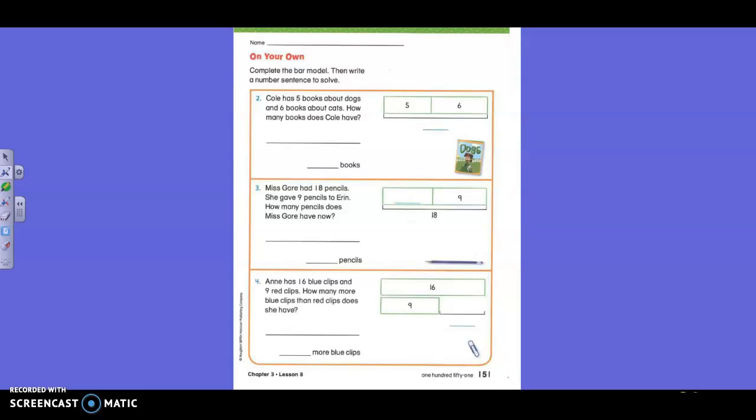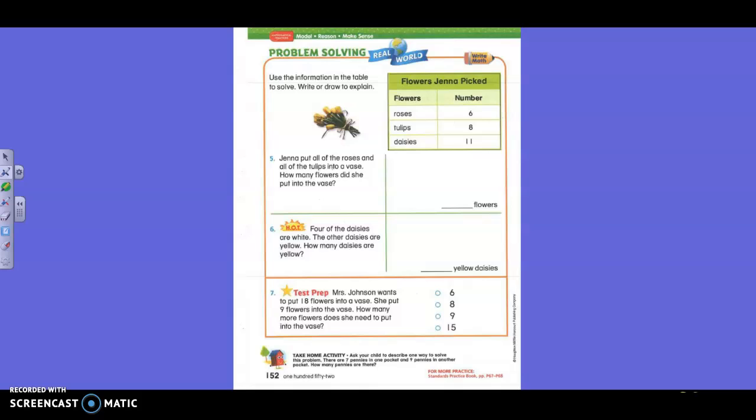On your own, boys and girls. How about this? I will let you do this with a partner. You have to decide whether or not it is addition or subtraction. We will do the hot problem, and then the whole mark will just be the on your own. Does that work? So boys and girls, let's look at this real quick before we start. It says, use the information in the table to solve. Write or draw to explain. Jenna put all of the roses and all of the tulips into a vase. Look up here. Look at all of the roses, all of the tulips. How many flowers did she put into the vase? You guys are deciding. Are you adding, subtracting, and then find the answer? I'm not giving it to you.